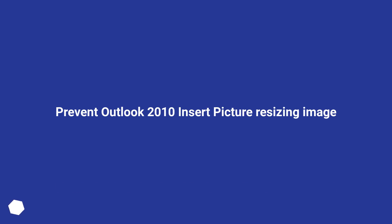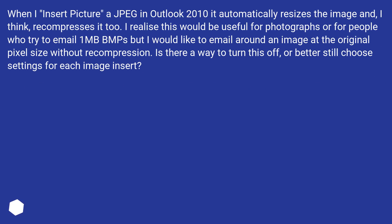When I insert a picture (JPEG) in Outlook 2010, it automatically resizes the image and recompresses it. I realize this would be useful for photographs or for people who try to email large bitmaps, but I would like to email an image at the original pixel size without recompression. Is there a way to turn this off, or better still choose settings for each image insert?